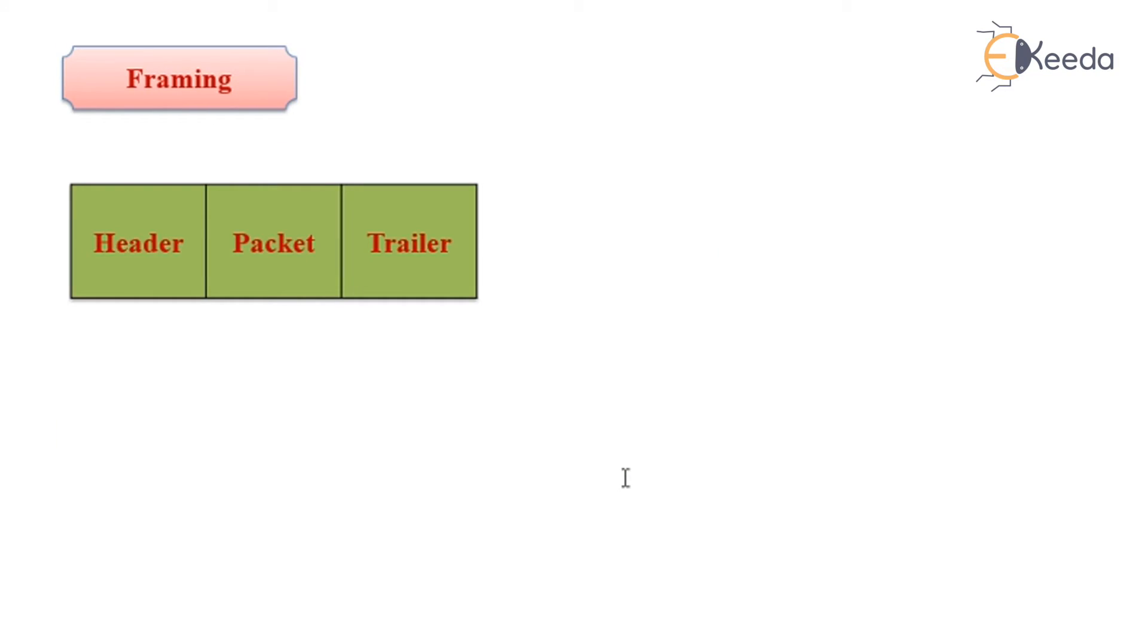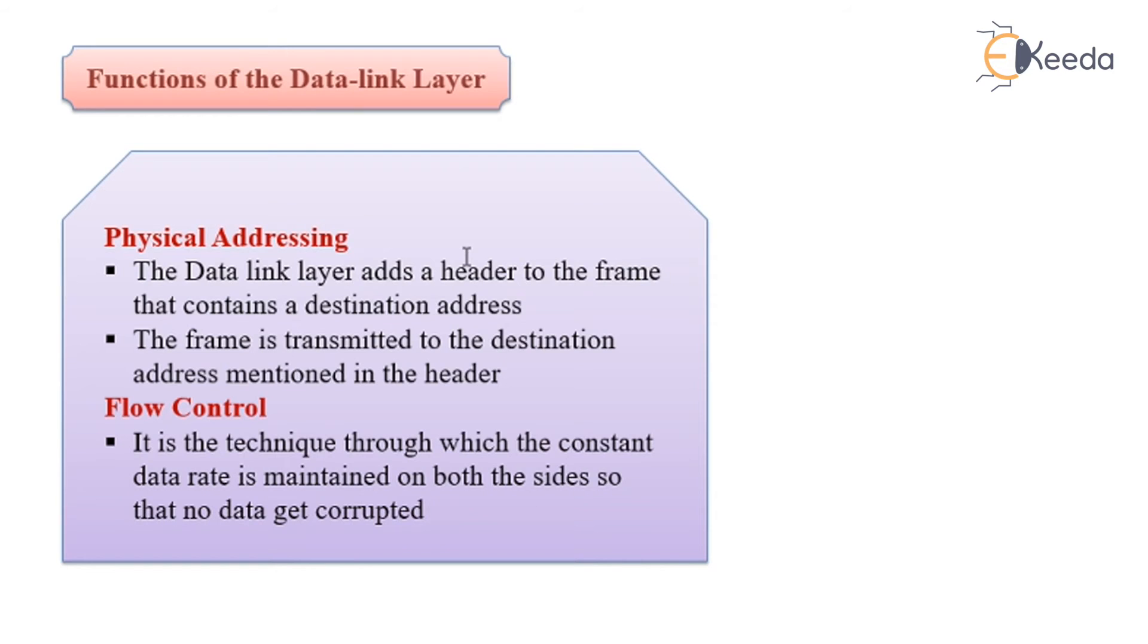Framing means the packet consists of the header in its front and trailer so that the packet is being routed correctly to the right destination. Functions of data link layer are now summarized as physical addressing and flow control.